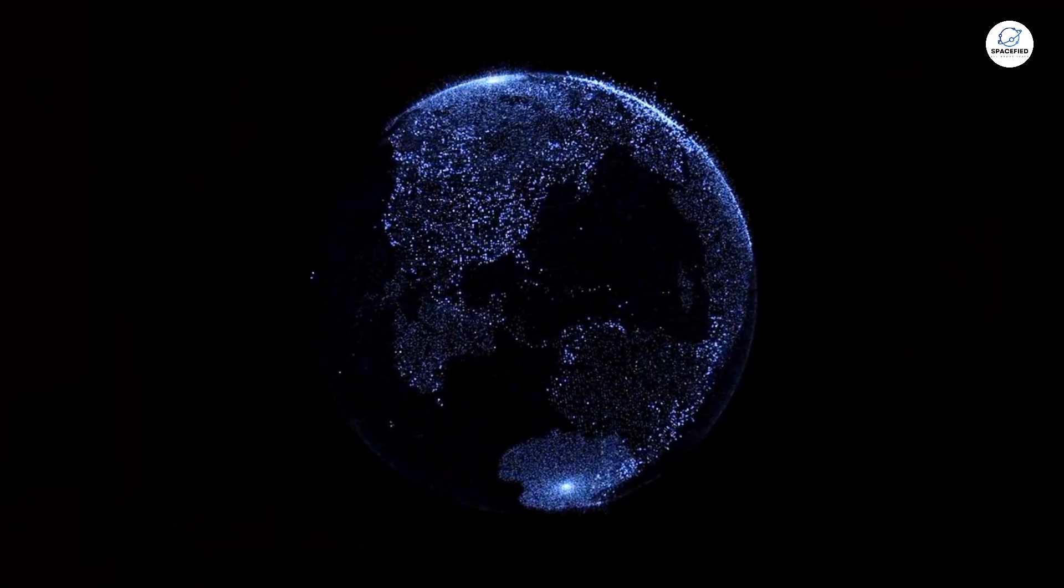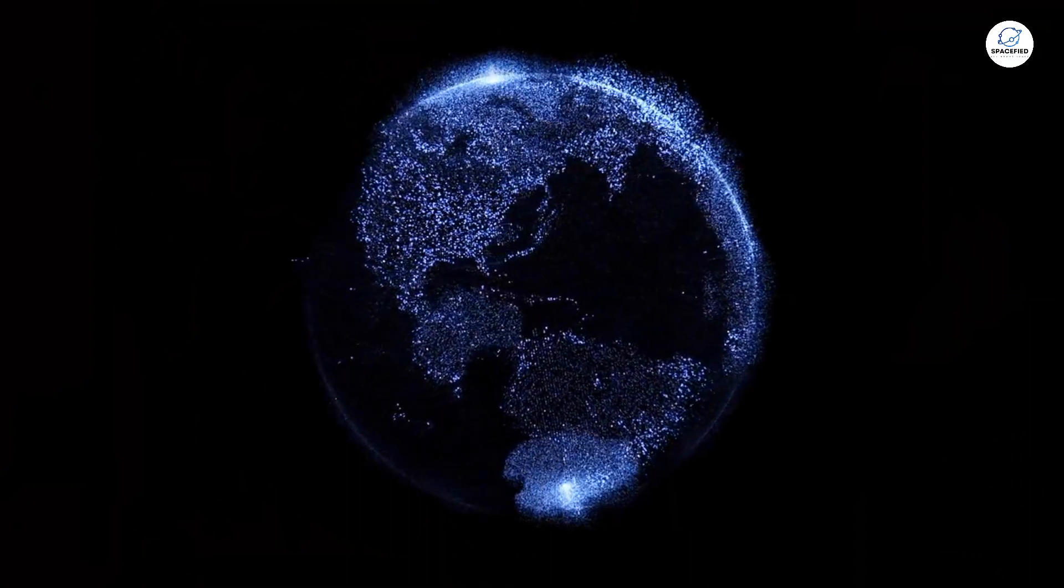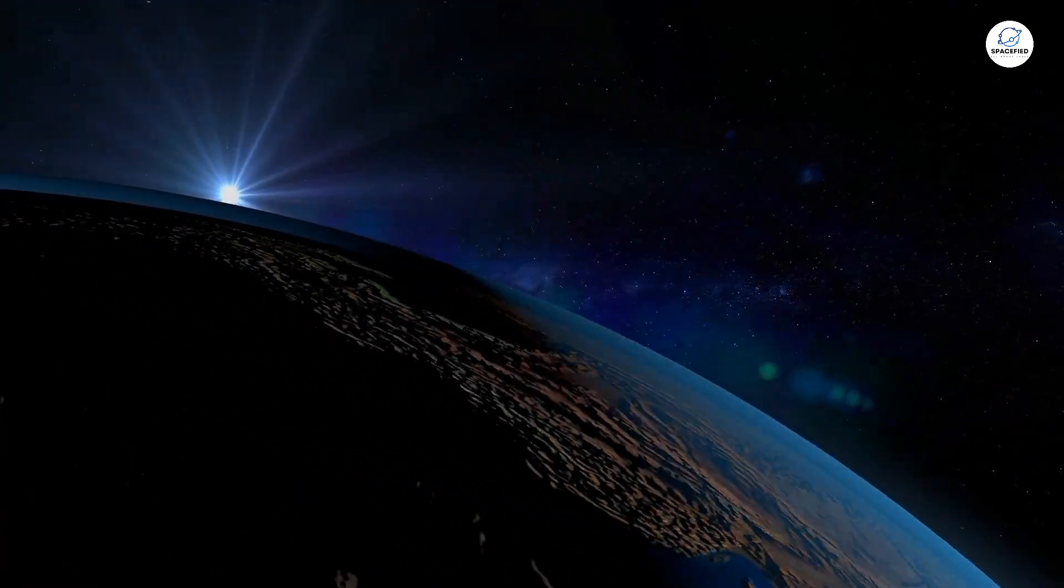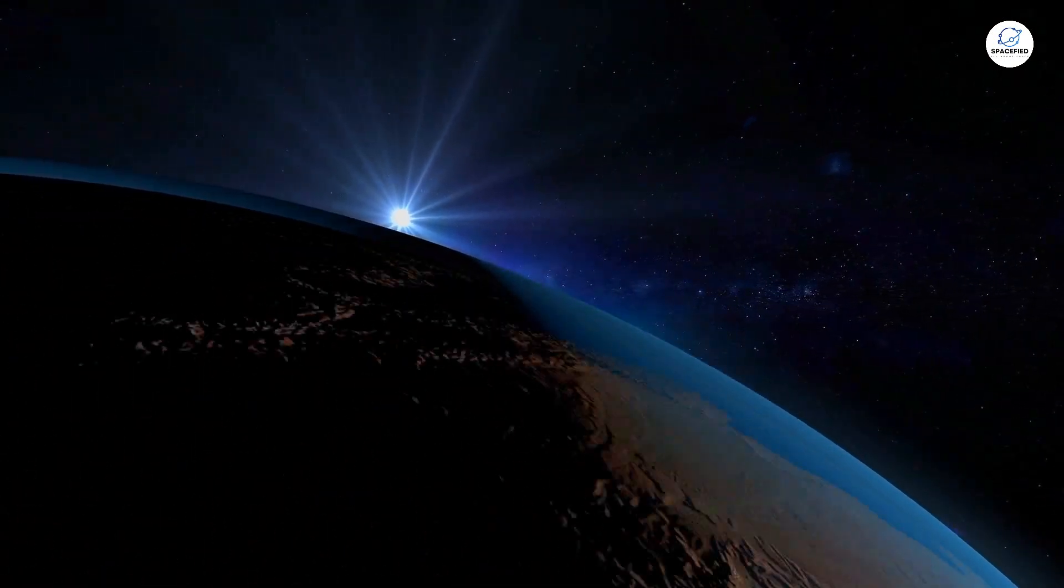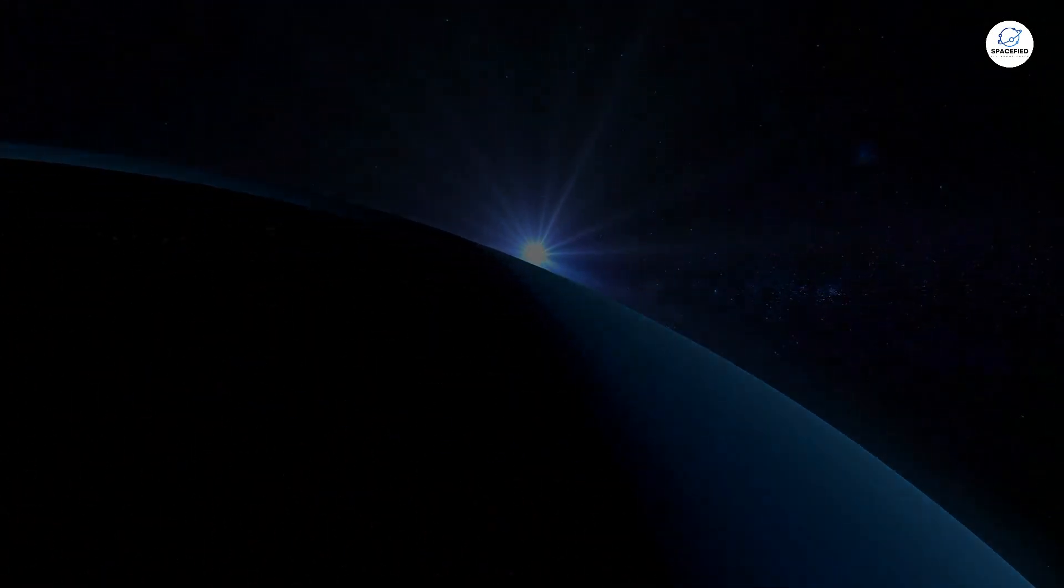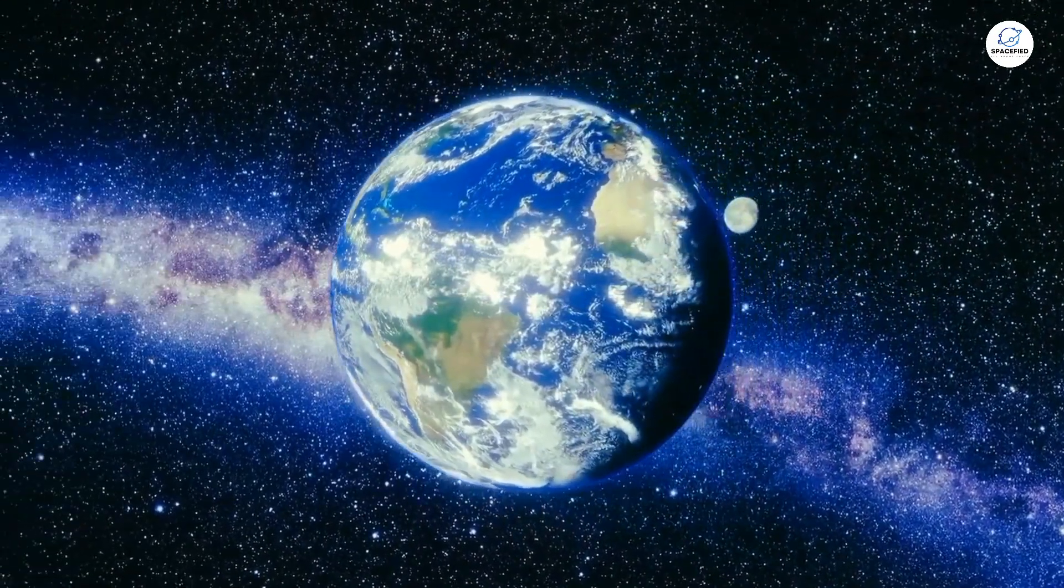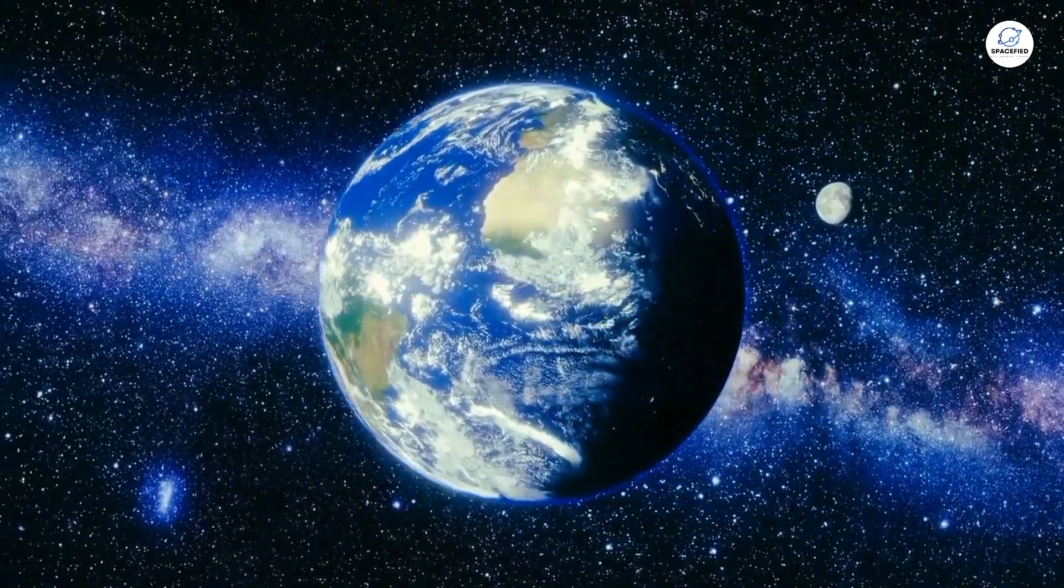The telescope has uncovered a planet that could potentially outshine Earth in its ability to support life. But what is this mysterious place? And could it be the answer to one of humanity's oldest questions? Are we alone in the universe? Enter Gliese 581g, an exoplanet located about 20 light-years away in the Libra constellation.